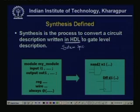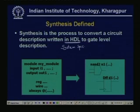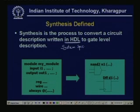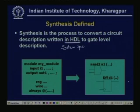We take one small example. This is a module — my_module — with input I1 and output out1 with some HDL logic. Given this small specification, it can be converted into some NAND gates and flip-flops. These are hardware components — the system defined with hardware like logic gates and flip-flops. This is logic synthesis from an HDL description.